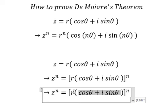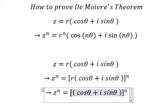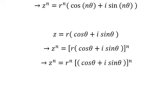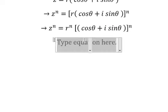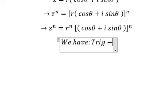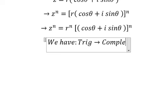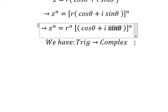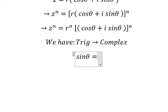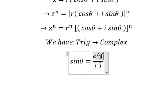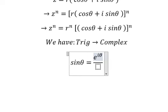So in this one we have sine θ, that is e to the power of iθ minus e to the power of negative iθ over 2i.